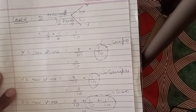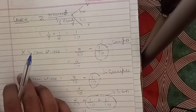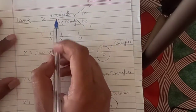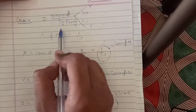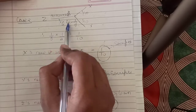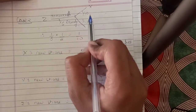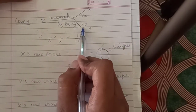Let us discuss the second case. Z acquires 1/5 share equally from X and Y. Z has acquired a total of 1/5, from both X and Y equally.